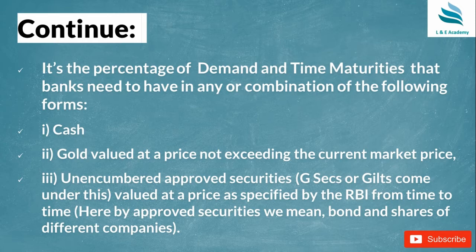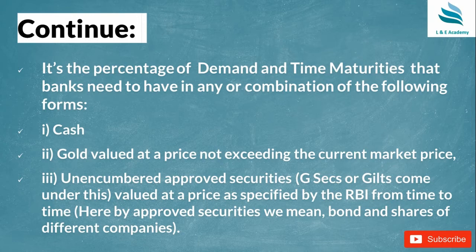If that same customer comes with 5,000 rupees and wants a fixed deposit to earn more interest — say the bank offers 7% instead of the 4% savings rate — and they don't need the money for one year, they will invest it as a fixed deposit and earn 7% returns. This is a time liability — the bank will only return the 5,000 rupees after one year. This is the difference between demand and time maturities.